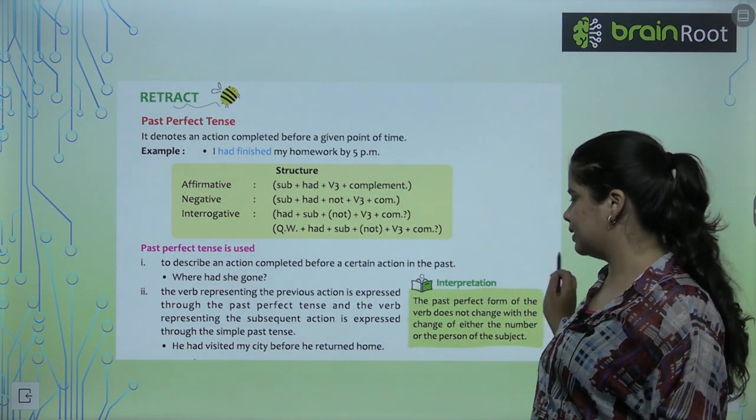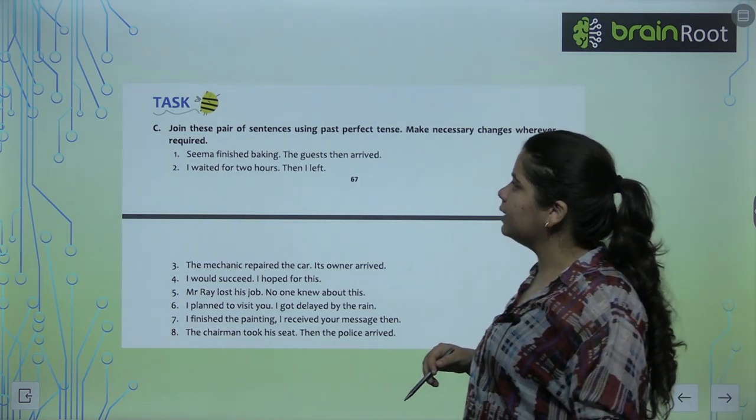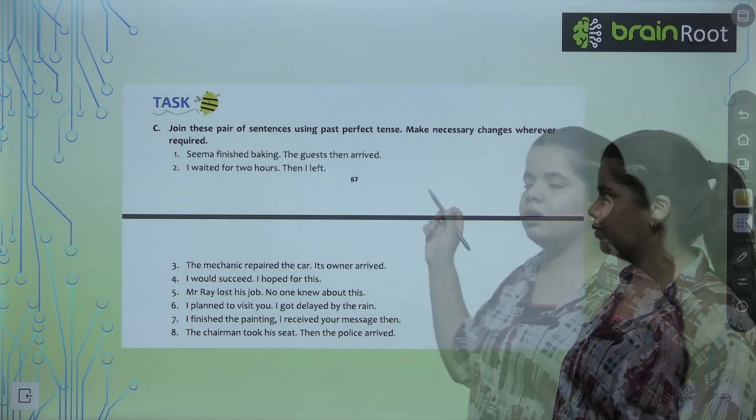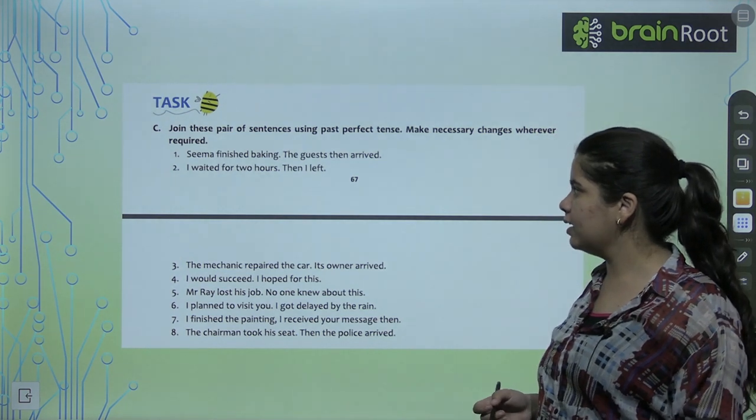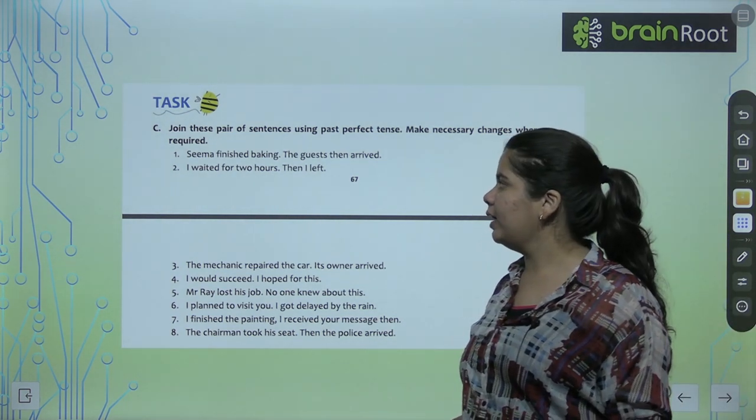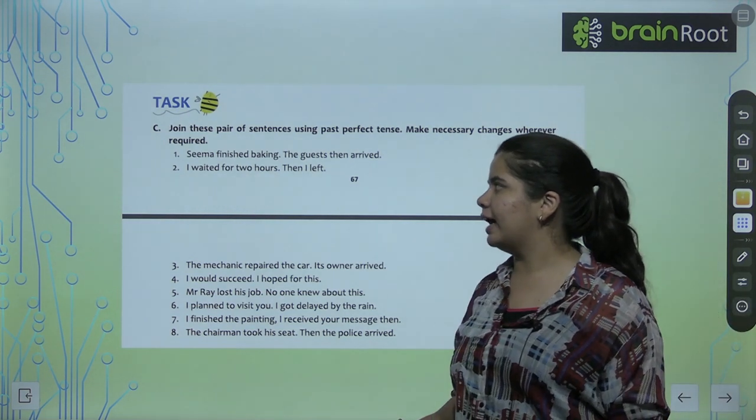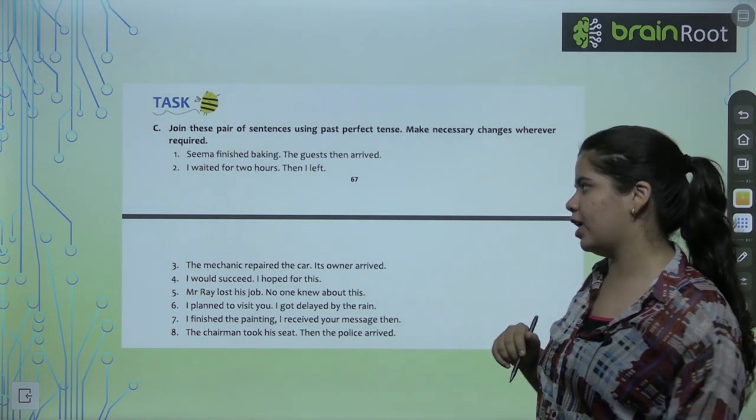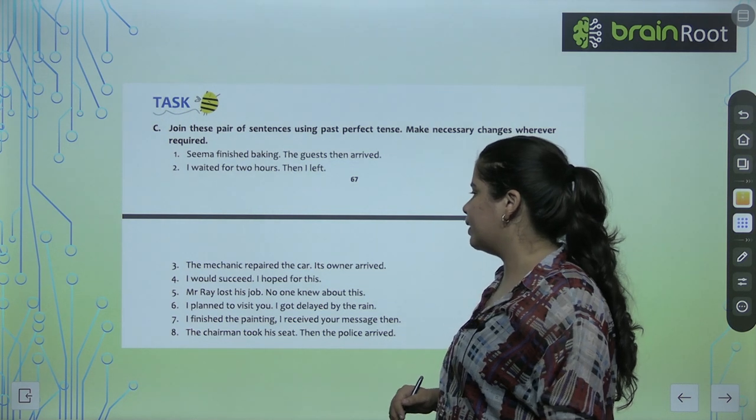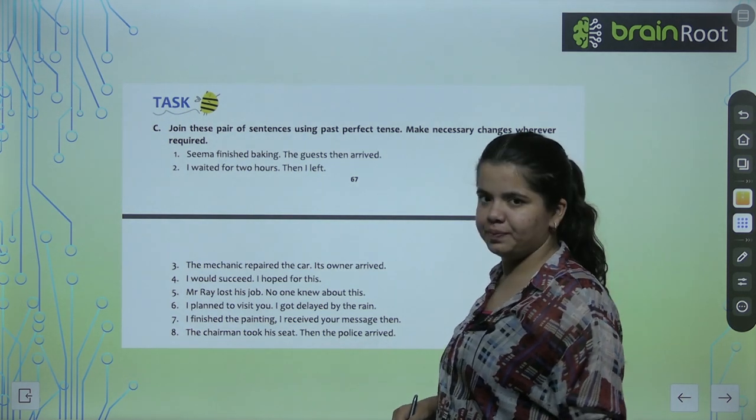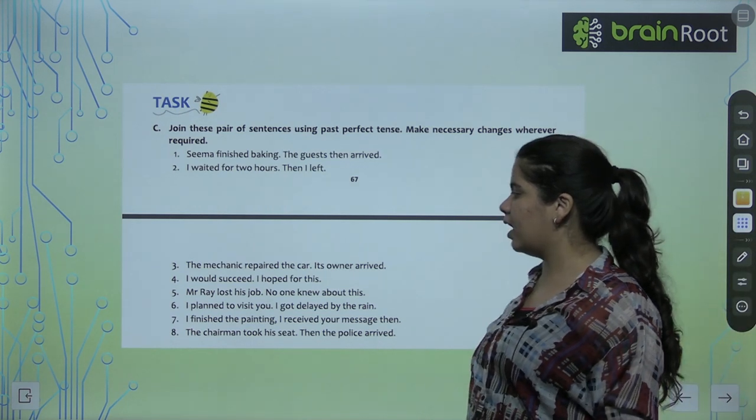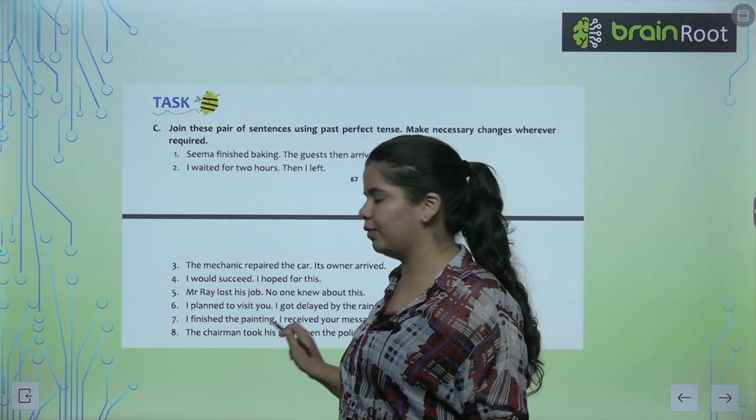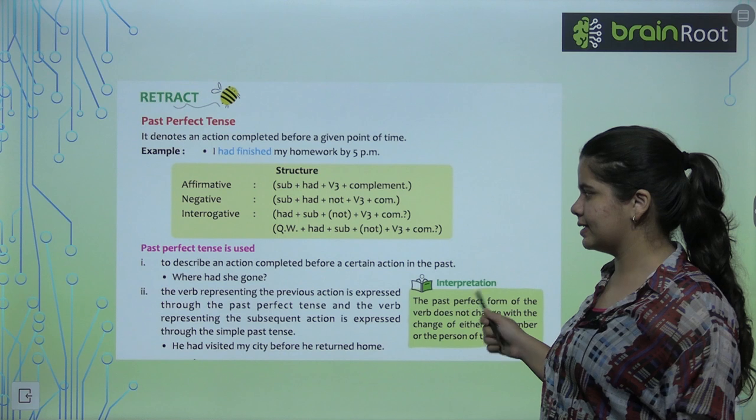Join the pairs using past perfect tense. Seema finished baking. The guest then arrives. So, the answer for the first one: Seema finished baking when the guest had arrived. I waited for 2 hours, then I left. I had waited for 2 hours and then I had left. Have is wrong, had you have to use. The mechanic repaired the car, its owner arrived. The mechanic repaired the car when the owner had arrived. So, this is how you have to do it. The last 4 I want you to try yourself. It's a very easy exercise.